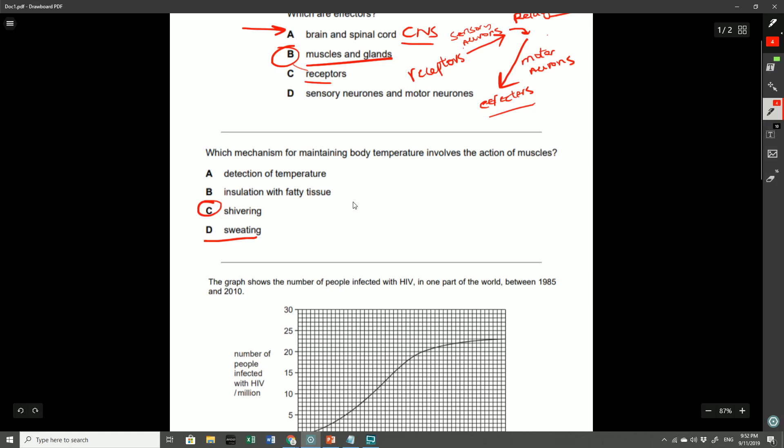The sweat is then going to evaporate from the skin, allowing the skin to cool down. But unfortunately, the sweat gland is not a muscle. And the answer here was wrong, because the key word here was what involves the action of muscles.